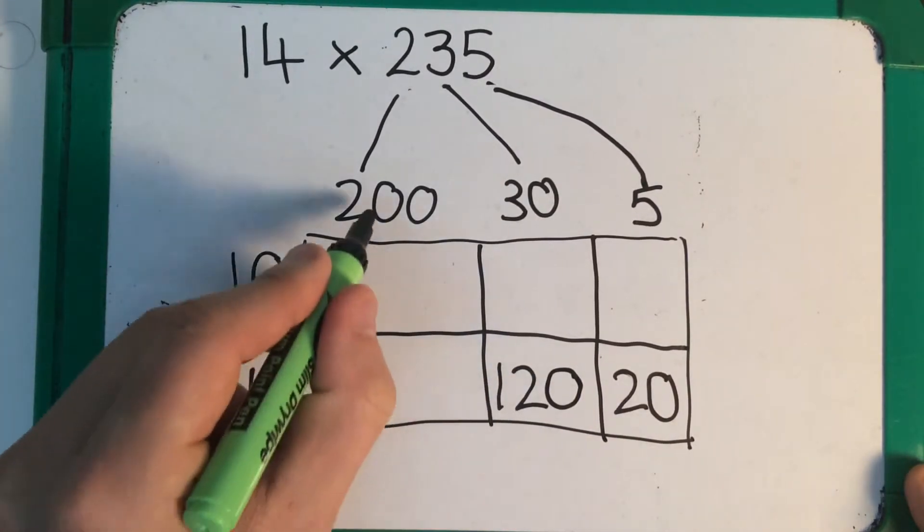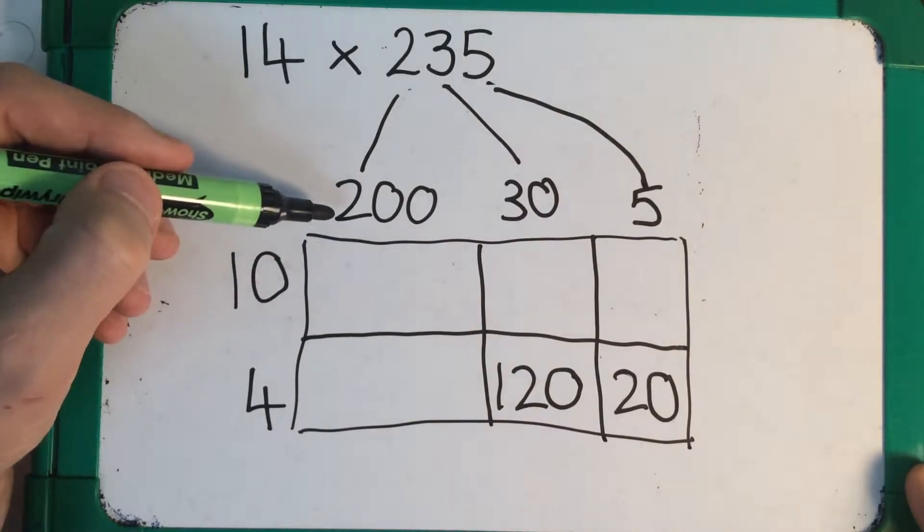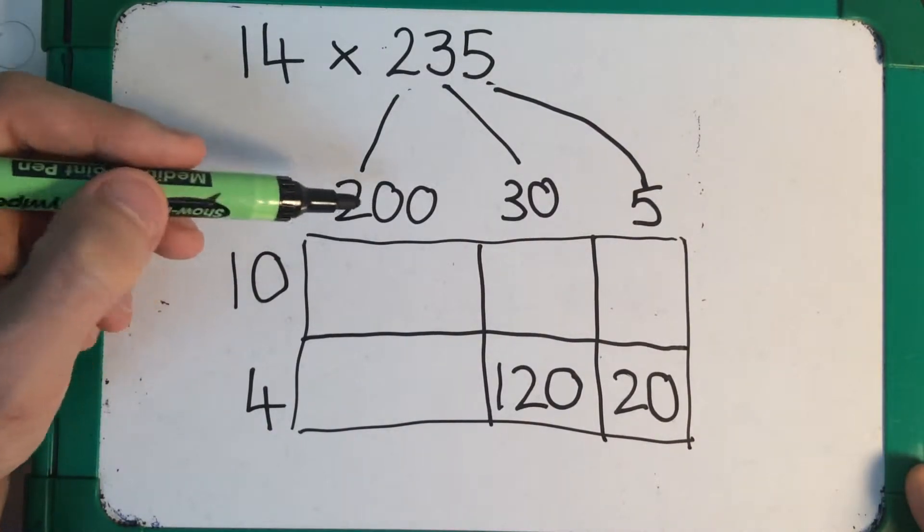And here 4 times 200. I know that 4 times 2 is 8. So 4 times 200 is 800.